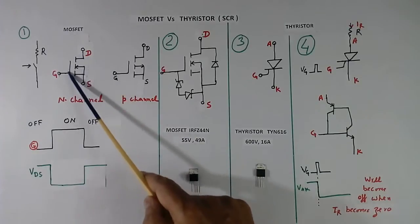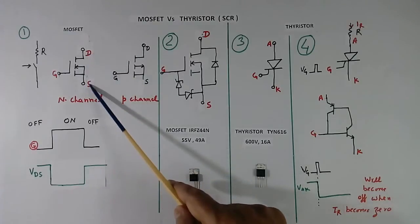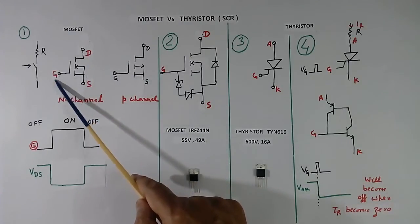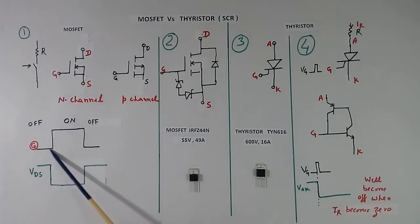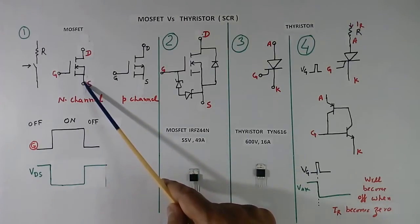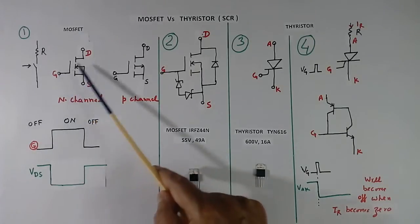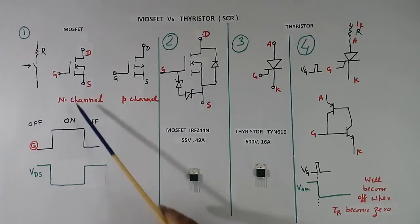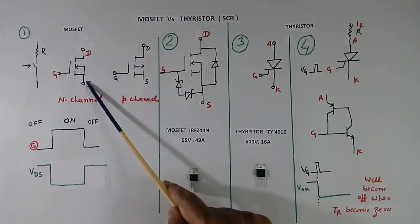This is the MOSFET symbol. It has 3 terminals: D means drain, S means source, G means gate. When we give a gate pulse, this MOSFET becomes ON. When this is 0, this MOSFET will be OFF. From here to here I am giving some voltage, that is called gate pulse, so this will come ON.